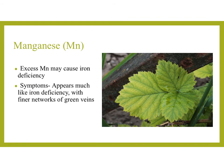Manganese — not to be confused with magnesium, even though they share many of the same letters — has the chemical symbol Mn. An excess of manganese may cause iron deficiency. The symptoms appear much like iron deficiency, with a fine network of green veins visible on the yellowish leaf.